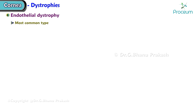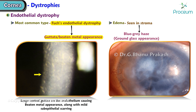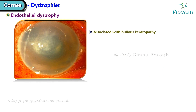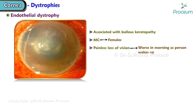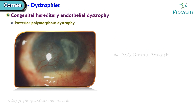Fuchs endothelial dystrophy gives a guttata beaten-metal appearance to the endothelium. Edema is seen in the stroma, giving a blue-gray haze also known as ground-glass appearance. It is associated with bullous keratopathy, is more commonly seen in females, and presents with painless loss of vision that is worse in the morning upon waking. Treatment is keratoplasty.